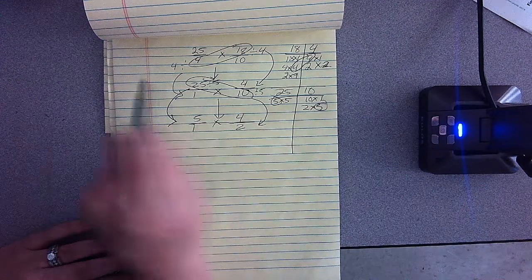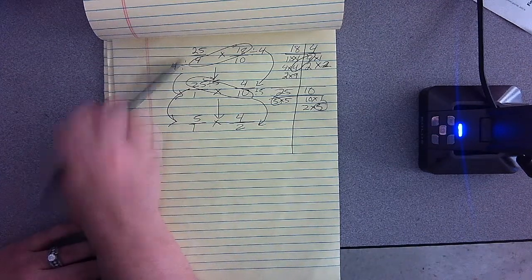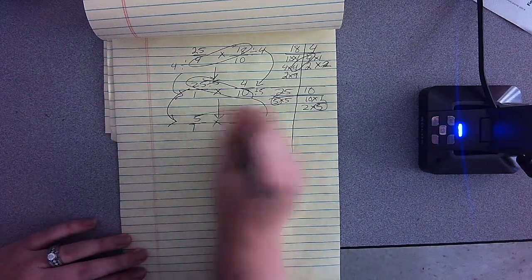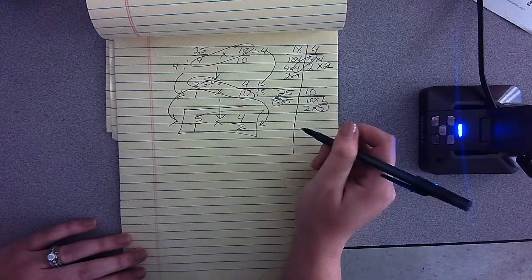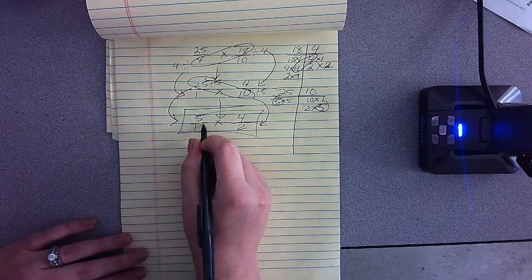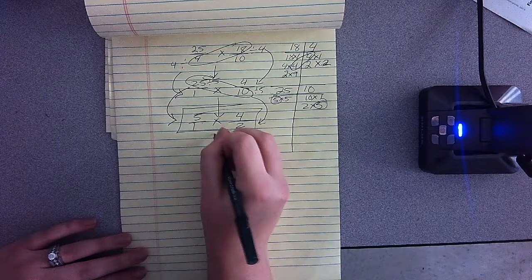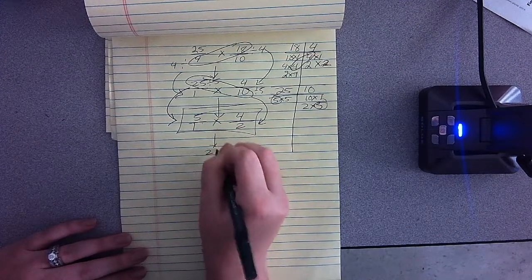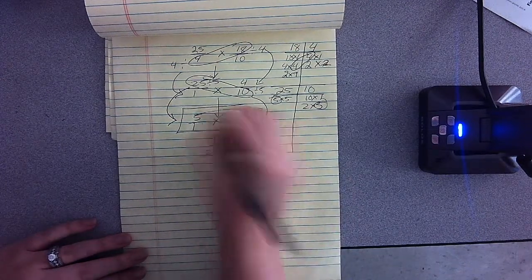Alright, and now I went from all this to this nice, simple equation here. So now I'm going to multiply straight across. So five times four I know is 20, and one times two is two.